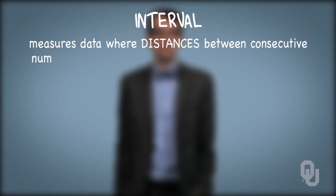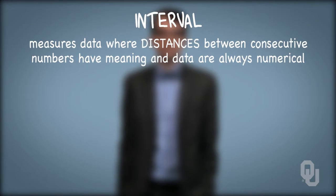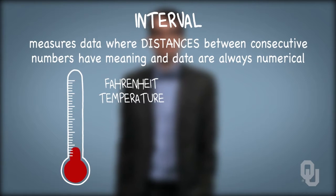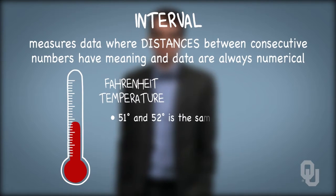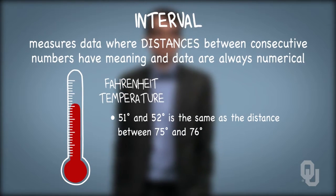The interval scale measures numerical, not categorical data, where the distances between consecutive numbers have meaning. There aren't many examples of interval scale measures, but the most commonly discussed one is Fahrenheit temperature. With Fahrenheit, temperatures can be ranked, and the amounts of heat between consecutive readings are the same — the distance between 51 and 52 degrees is the same as the distance between 75 and 76 degrees. Also, the zero point is just a matter of convention in an interval scale, and not a natural or fixed zero point.